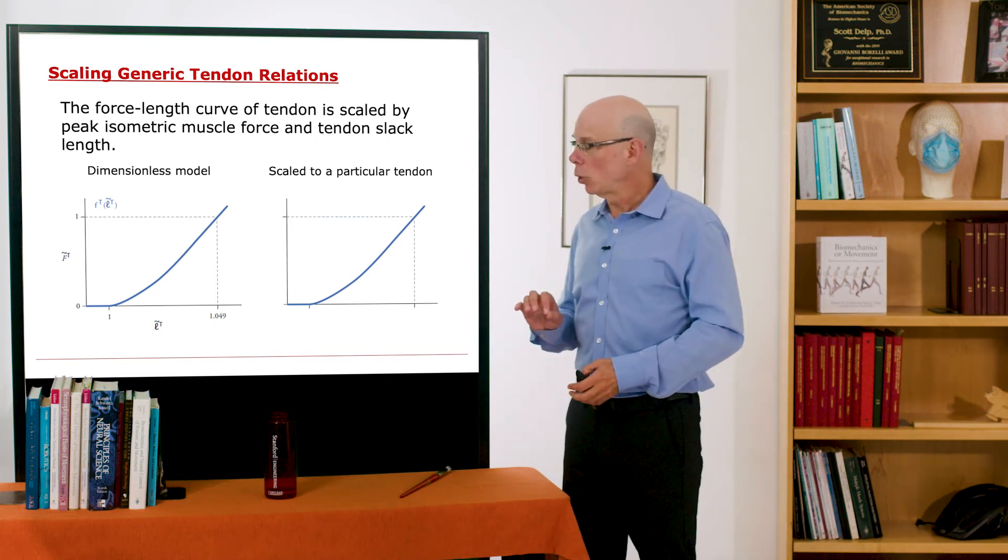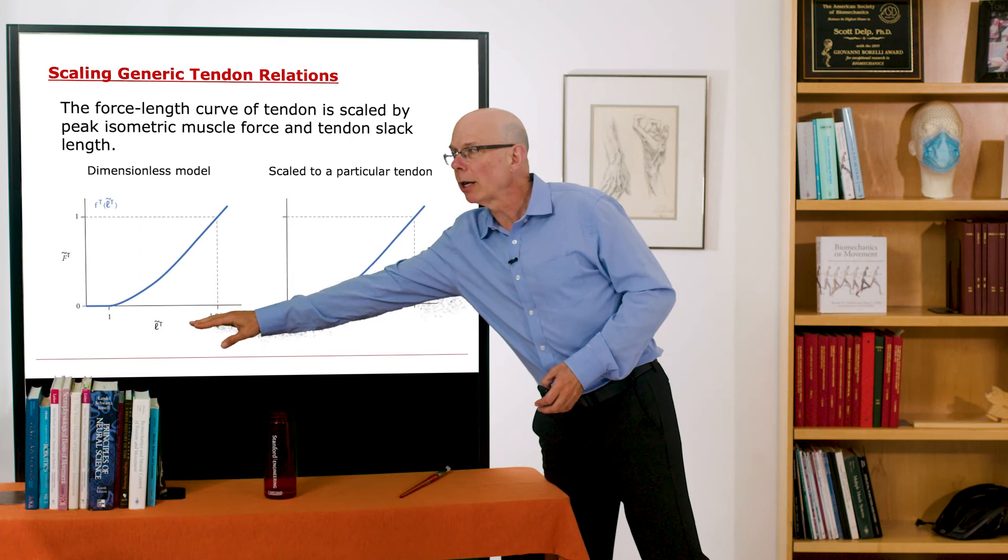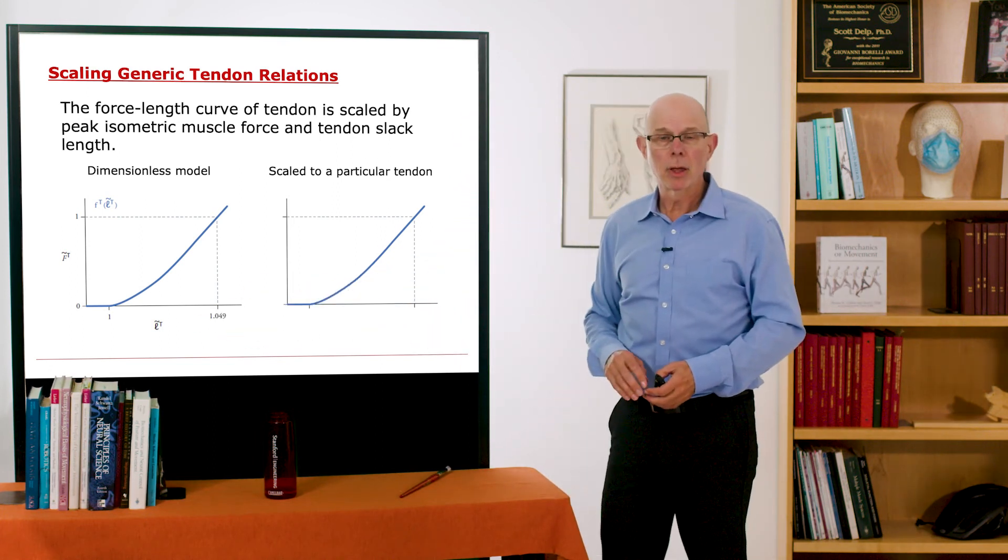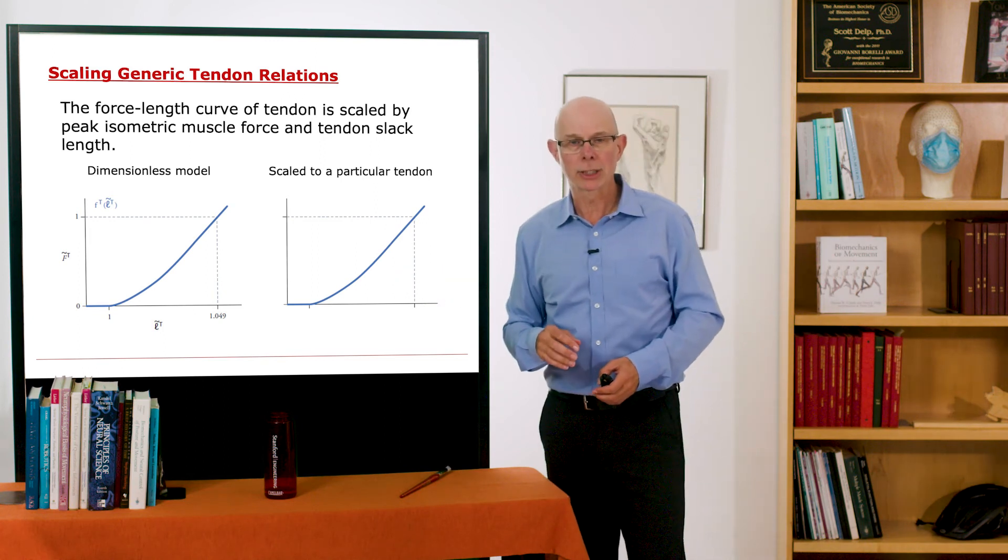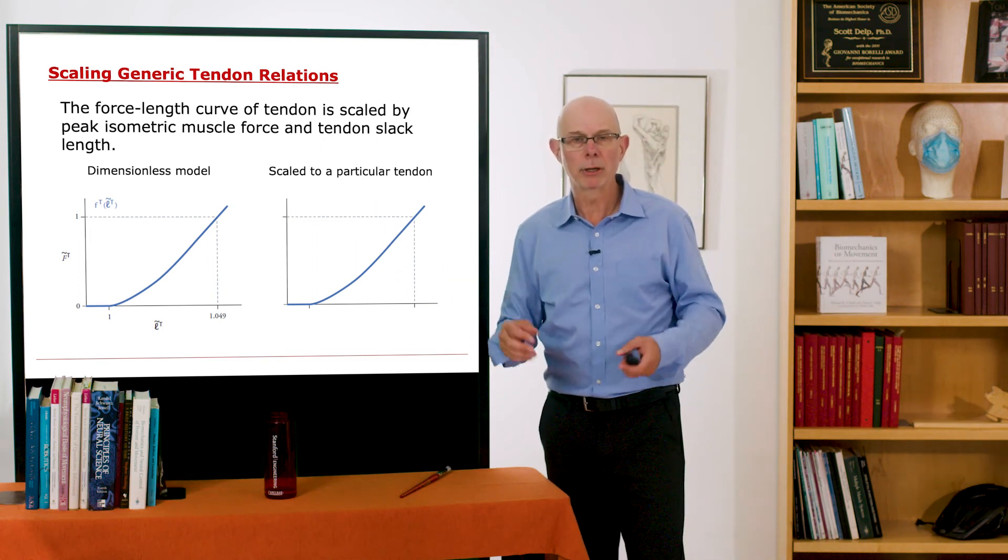So with those relationships, you can take a generic property of a muscle and a tendon and scale that to represent a particular tendon, given its length and the peak force of muscle.